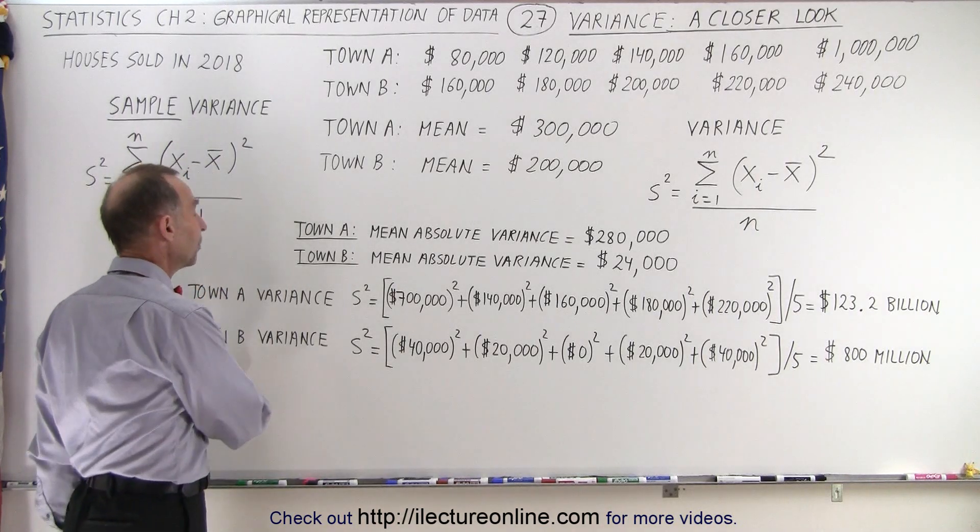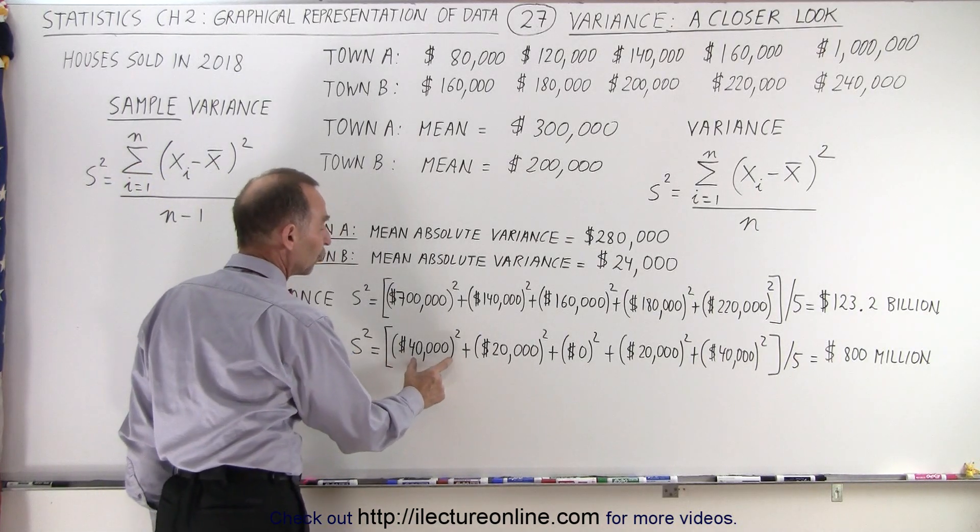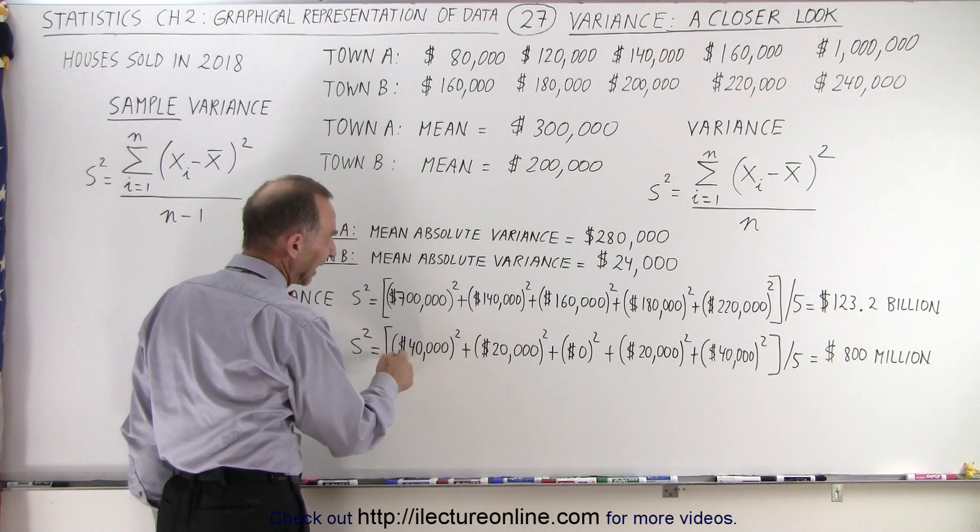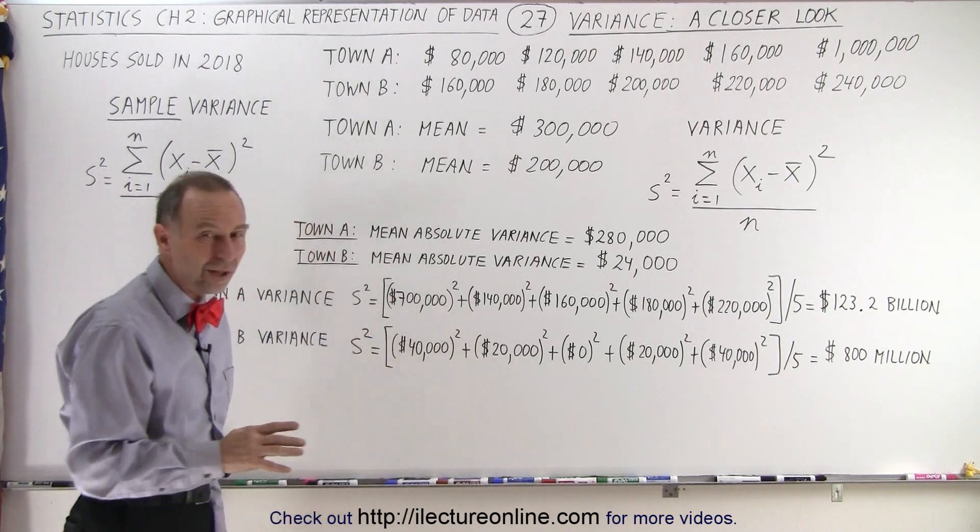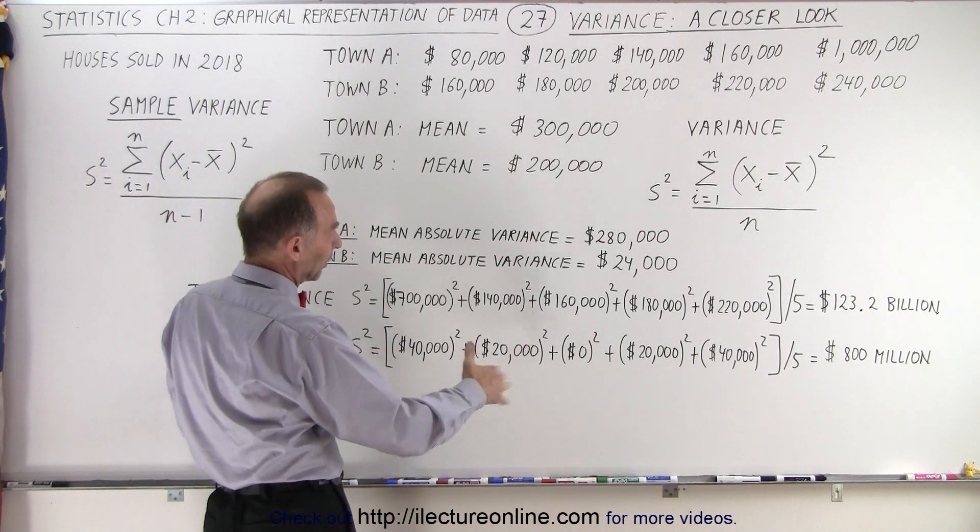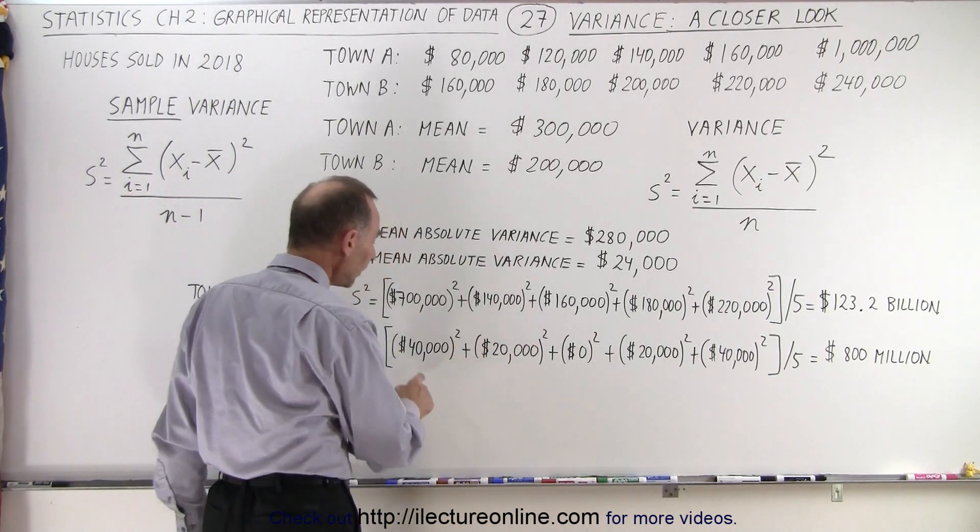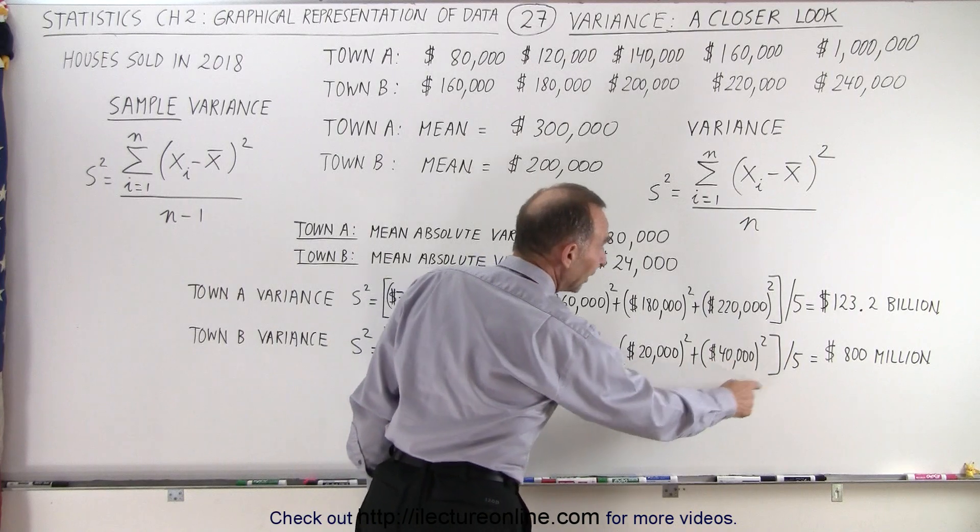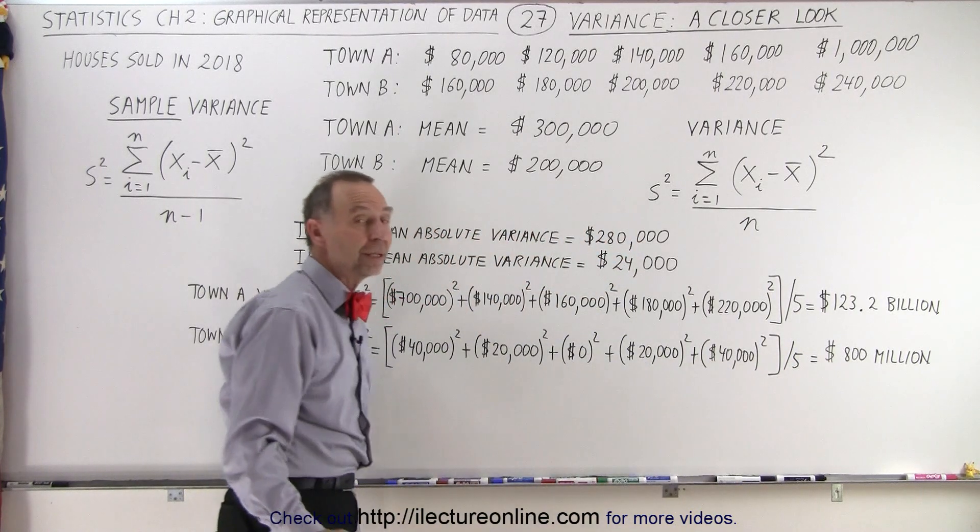As opposed to for town B, where the variances are much smaller. If we square them, and again, I know that these are negative values, but it doesn't matter because we square them anyway. So when we square them all and divide by five, we only get eight hundred million.